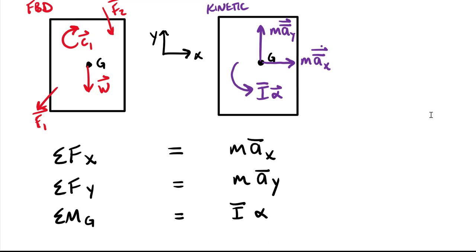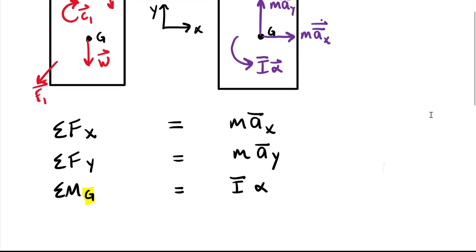Given these two diagrams, we can write corresponding equations. The sum of forces in the X direction equals mass times acceleration of the centroid in X — our classic F equals MA customized for the X direction, recognizing it's the acceleration about the centroid. In the Y direction, sum of forces equals mass times acceleration of the centroid in Y. Then as a moment equation, we can write the sum of moments about the centroid equals I-bar times alpha.